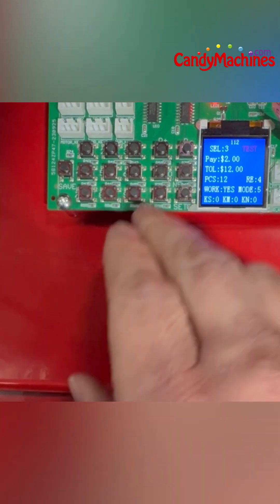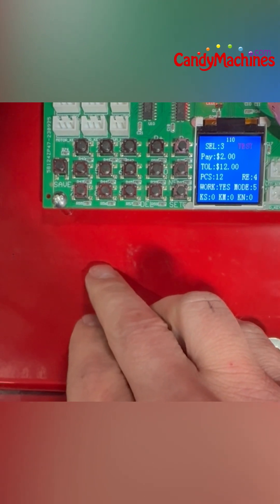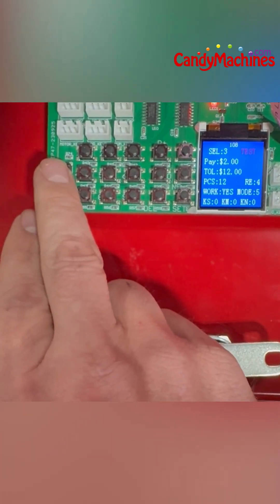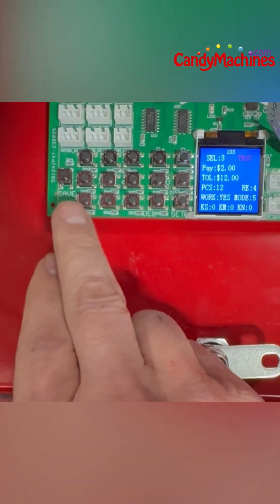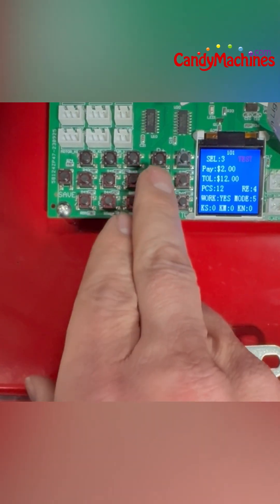And again, we'll do a quick overview of the buttons just so you understand how to navigate. You have the save button here. You've got your numbers, 1, 2, 3, 4, 5, 6, 7, 8, 9, and 0.